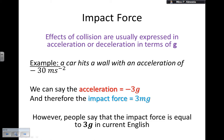First of all, let me tell you that whenever there is an accident or you need to talk about the effects of a collision, normally people express acceleration or deceleration in terms of g. For example, if I have a car and it hits a wall with an acceleration of minus 30 meters per second squared, we can say that the acceleration is minus 3g.